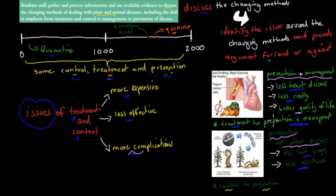These are two examples of how we shifted from treatment or control to prevention or management. The reasons are that we save more money, it's more effective, and generally there are fewer complications when we focus on prevention and management as opposed to treatment and control. This was just a summary of the last couple of dot points — hopefully this video is useful.